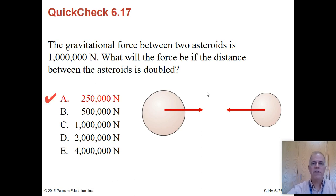Answer is 250,000 newtons, one quarter of the force. Double the distance. Keep everything else the same. If you double the distance, you'll get one quarter of the force. If you triple the distance, you'll get one ninth the force. If you make it five times the distance, you'll get one twenty-fifth the force. Inverse-square function.